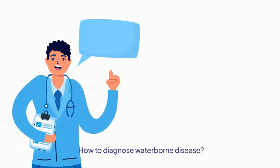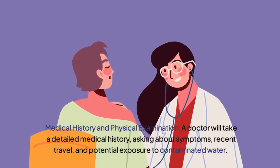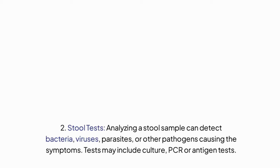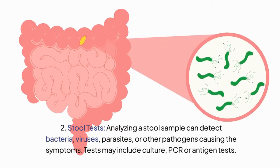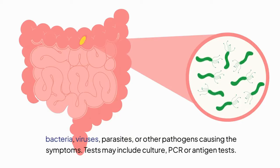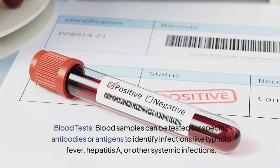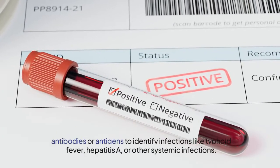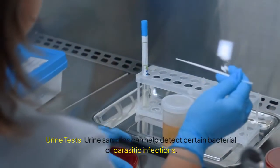How to diagnose waterborne disease. Medical history and physical examination: a doctor will take a detailed medical history, asking about symptoms, recent travel, and potential exposure to contaminated water. Stool tests: analyzing a stool sample can detect bacteria, viruses, parasites, or other pathogens causing the symptoms. Tests may include culture, PCR, or antigen tests. Blood tests: blood samples can be tested for specific antibodies or antigens to identify infections like typhoid fever, hepatitis A, or other systemic infections. Urine tests: urine samples can help detect certain bacterial or parasitic infections.